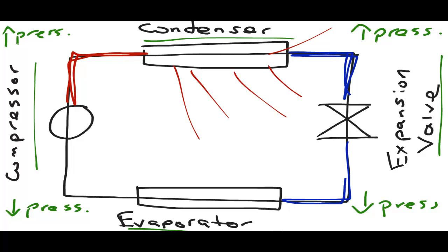In the evaporator, the refrigerant gains heat from the surrounding area. This results in the area being cooled. The evaporator is responsible for the cold temperatures inside of the refrigerator. I will use blue lines to show that the area is now colder.